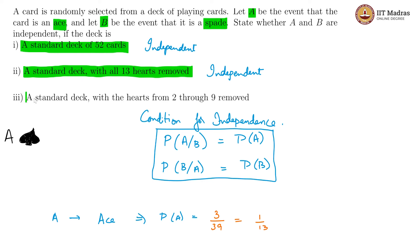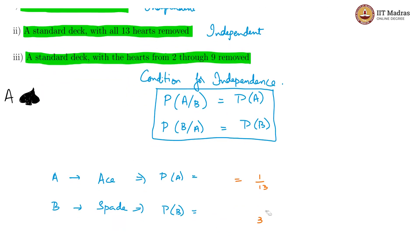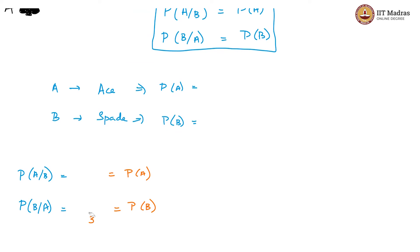Now let us look at the third case: a standard deck with hearts from 2 through 9 removed — that is, heart 2, heart 3, heart 4, heart 5, heart 6, heart 7, heart 8, and heart 9 are removed — which means 8 cards are removed. So there are now 44 cards in the deck. And among them, how many aces are there? There are 4 aces, because the ace of hearts is not removed. So P of A is 4 by 44, which equals 1 by 11.